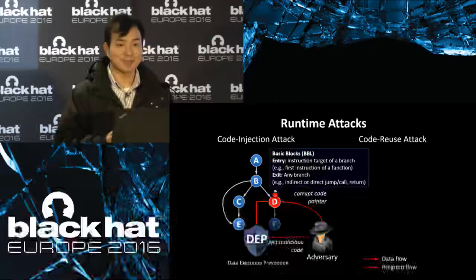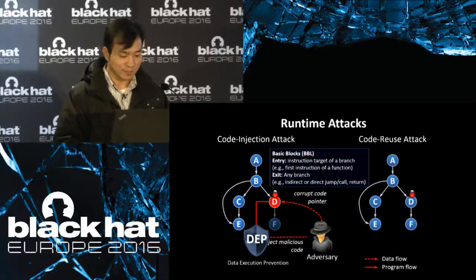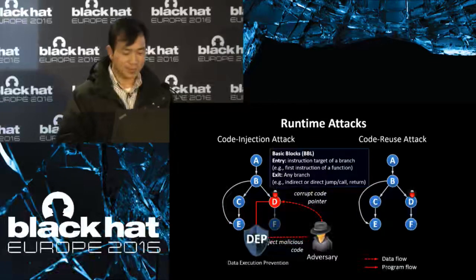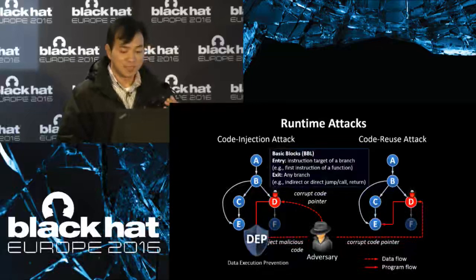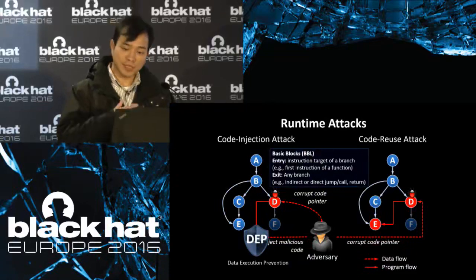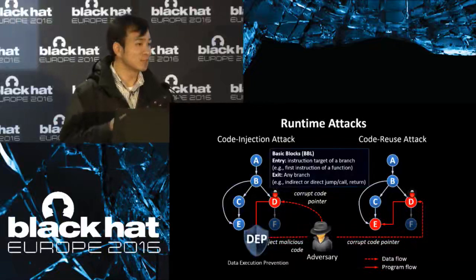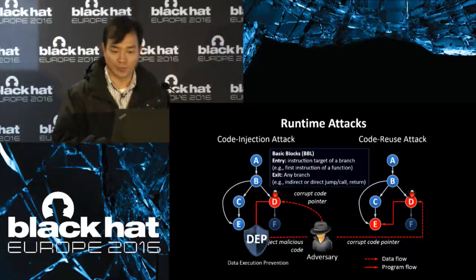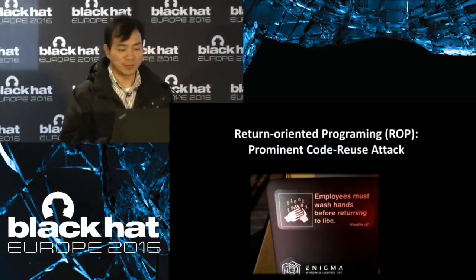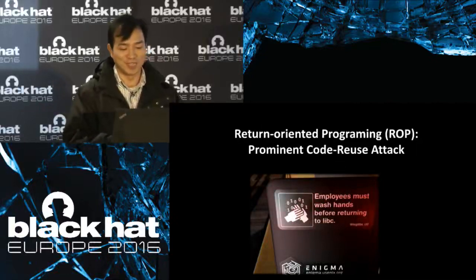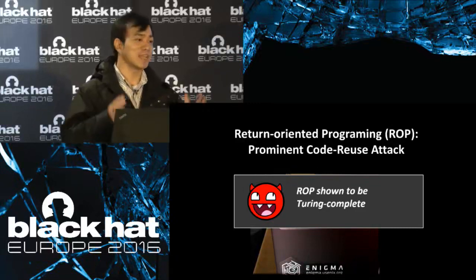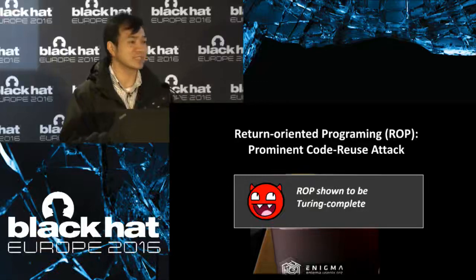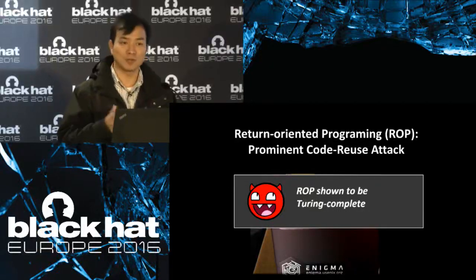The attacker doesn't need to rely on newly injected code, but just reuses existing code organized in a malicious way. This is formally called return-oriented programming, or what we call code reuse attacks. It has been proven to be Turing-complete, which is horrifying because even though you can only use existing code, you can still do anything you want.